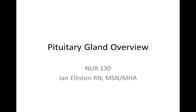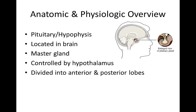Pituitary gland overview. The pituitary gland, or hypophysis, is a round structure about half an inch in diameter located on the inferior aspect of the brain, commonly referred to as the master gland. The pituitary secretes hormones that control the secretion of hormones by other endocrine glands. The pituitary itself is controlled by the hypothalamus, an adjacent area of the brain that is connected to the pituitary by the pituitary stalk.